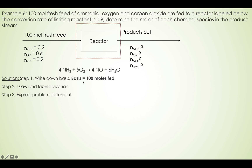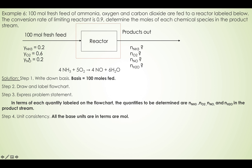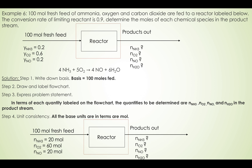Step three: express the problem statement. In terms of each quantity labeled on the flow chart, the quantity to be determined is the mole number of each chemical species in the product stream. Step four: unit consistency. Because the basis is 100 moles fed, the unit is moles. We can convert all units to moles. Because the mole fraction and the fresh feed moles are given, we can convert the entire stream to moles.